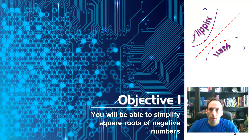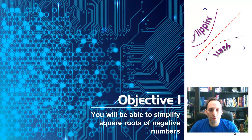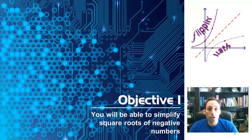Section 4.6, talking about complex numbers. Here's objective 1, where you're going to be able to simplify square roots of negative numbers. So with negative numbers, when we take the square root, this is where we're going to get imaginary numbers from.